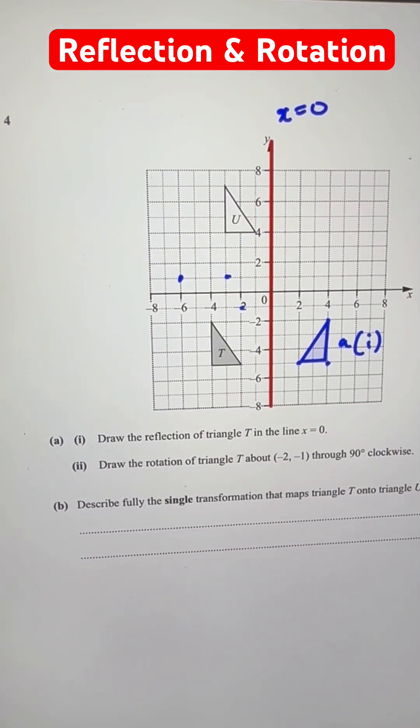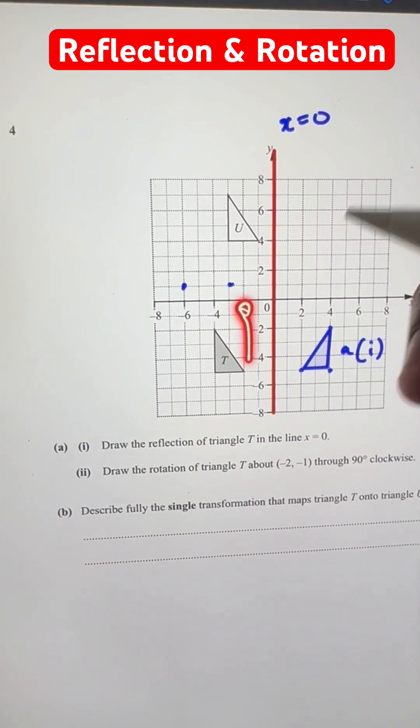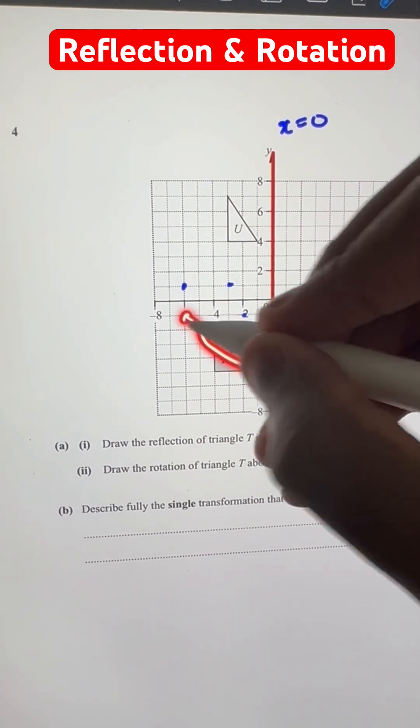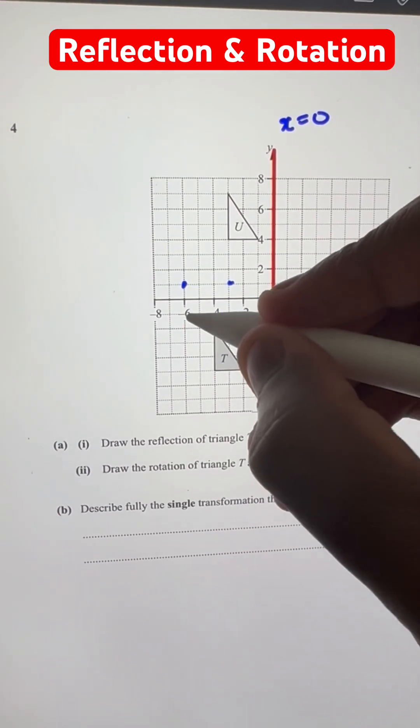And now for the final point, there's just 4 units below the center. So now it becomes 4 units to the left of the center. And it's over here.